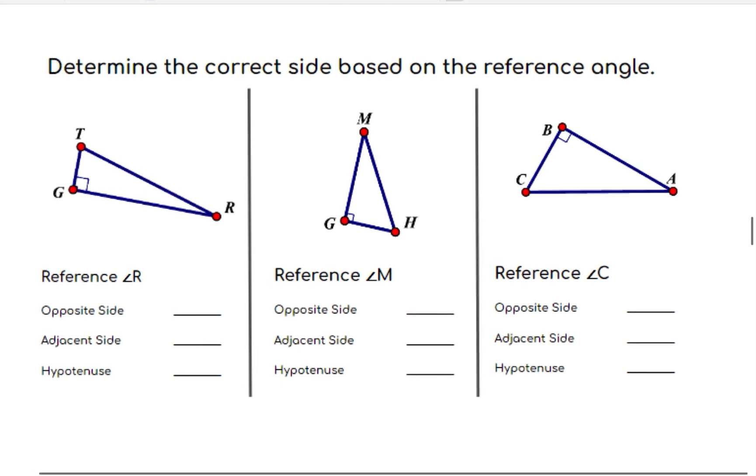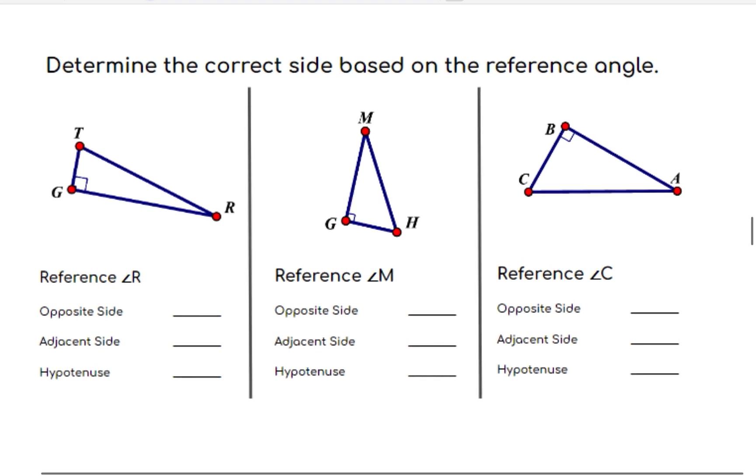And let's try and use the concept that we just learned to determine or find the answers to this problem. So determine the correct side based on the reference angle. So for the first example reference angle is R, angle R, and so opposite of angle R is segment GT or TG. Adjacent side of angle R is segment GR or RG. While hypotenuse is segment TR or RT.